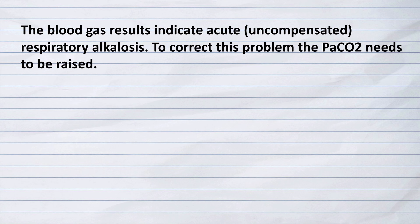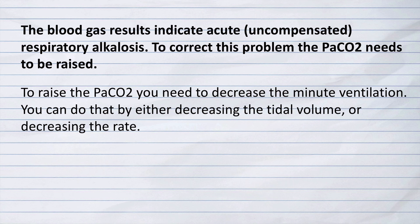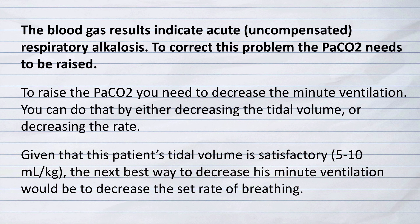The blood gas results indicate acute or uncompensated respiratory alkalosis. To correct this problem the CO2 needs to be raised, so you need to decrease the minute ventilation. We can do that by either decreasing the tidal volume or decreasing the rate. Given that this patient's tidal volume is within the satisfactory range of 5 to 10 mL/kg of ideal body weight, the next best way would be to decrease the set rate. None of the other choices make sense, so the correct answer has to be A — decrease the minute ventilation.